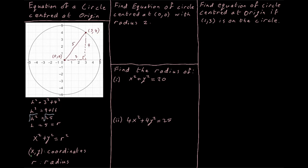Our x and y are our coordinates on the circle, and r is the radius. So the equation of a circle centered at the origin is x² + y² = r², the same radius for all of our points.